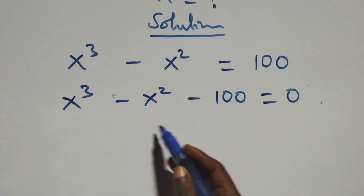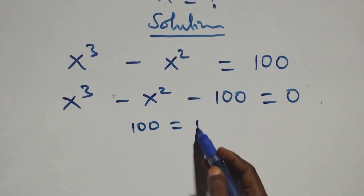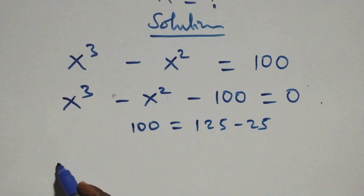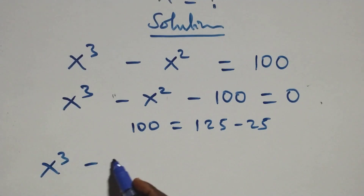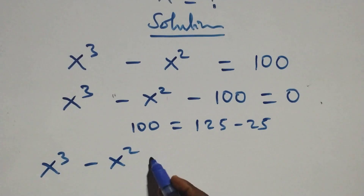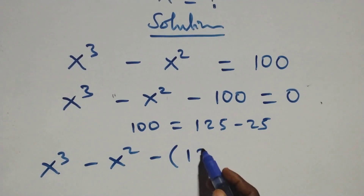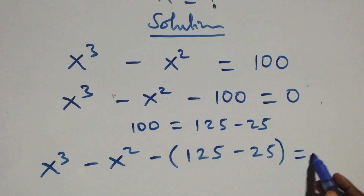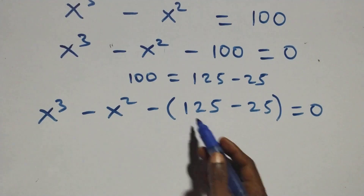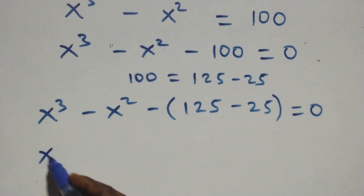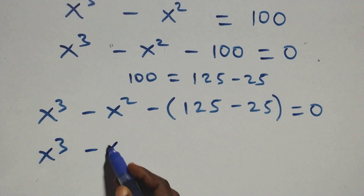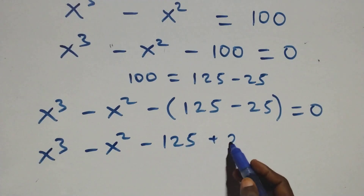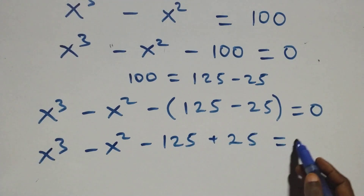Here we can write 100 as 125 minus 25. Then this equation becomes x cubed minus x squared minus (125 minus 25) equals 0. Opening the bracket, we have x cubed minus x squared minus 125 plus 25 equals 0.